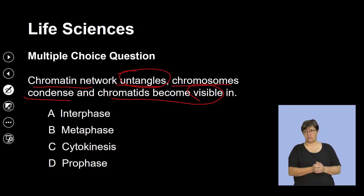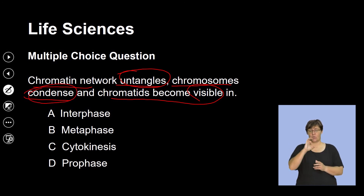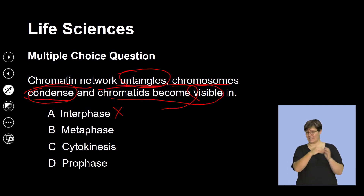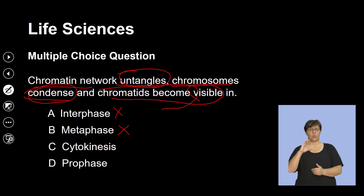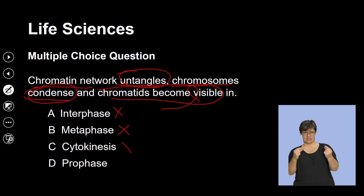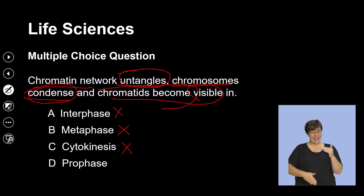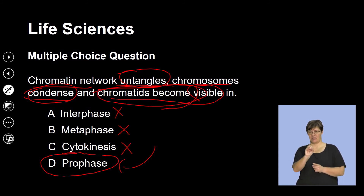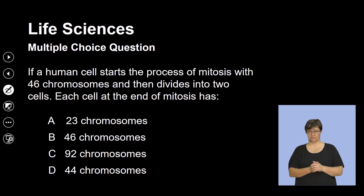Question two: the chromatin network untangles, chromosomes condense, and the chromatids become visible. This is describing events that occur in a particular stage. It's not interphase because that's when DNA replication occurs. Metaphase is identified by chromosomes meeting along the equator. Cytokinesis is the division of the cytoplasm at the end of telophase. These descriptions clearly point to prophase, when chromosomes become distinctly condensed and visible — so the correct answer is D, prophase.